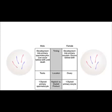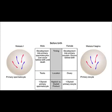Although spermatogonia develop into primary spermatocytes throughout life in the male, in the female, some oogonia develop into primary oocytes, but only before birth. Males can continue to produce viable sperm from puberty until death, but females can produce viable eggs only from puberty until the supply of primary oocytes is depleted.